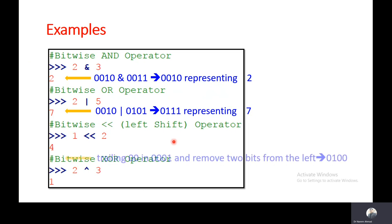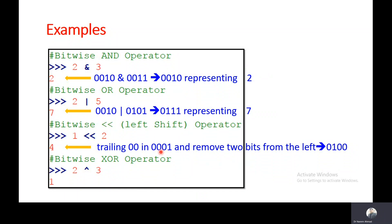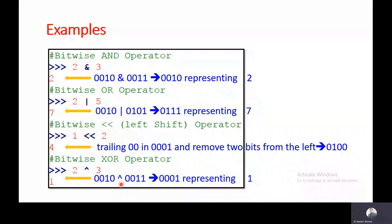In the next example I have taken the left shift operator between 1 and 2 and it is returning 4. First it converts 1 into a bit stream, then adds 2 zeros on the right side, removes 2 bits from the left side, and produces 0100, representing 4. In the last example I have taken XOR between 2 and 3. After converting into a bit stream and performing bit by bit, it produces 0001, representing 1.